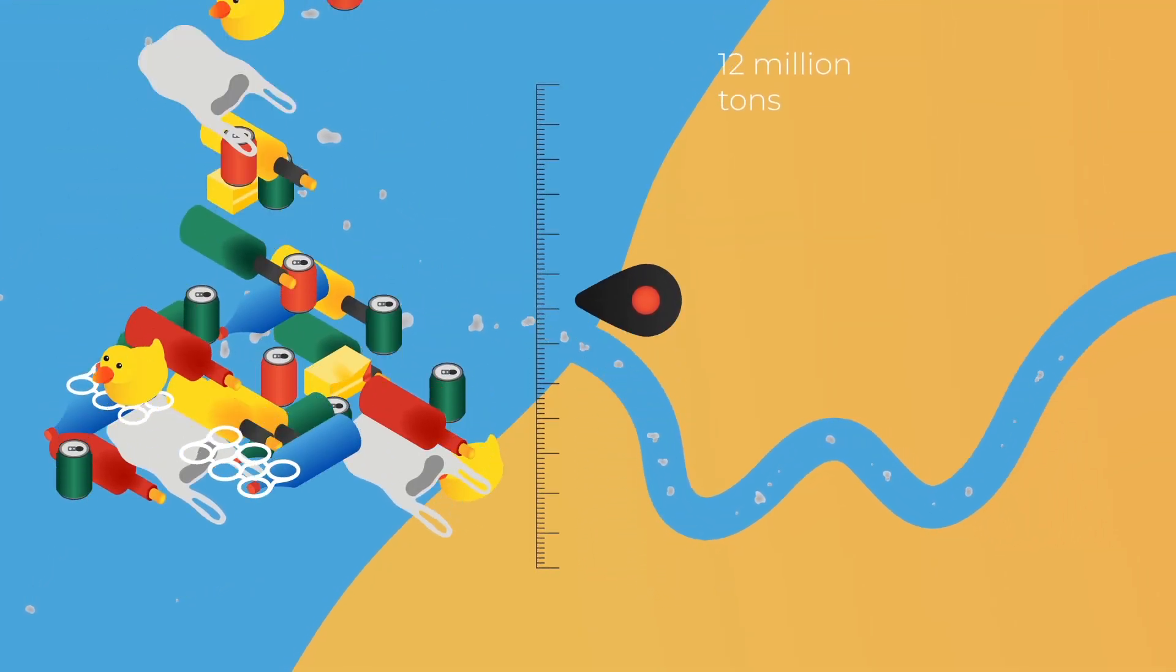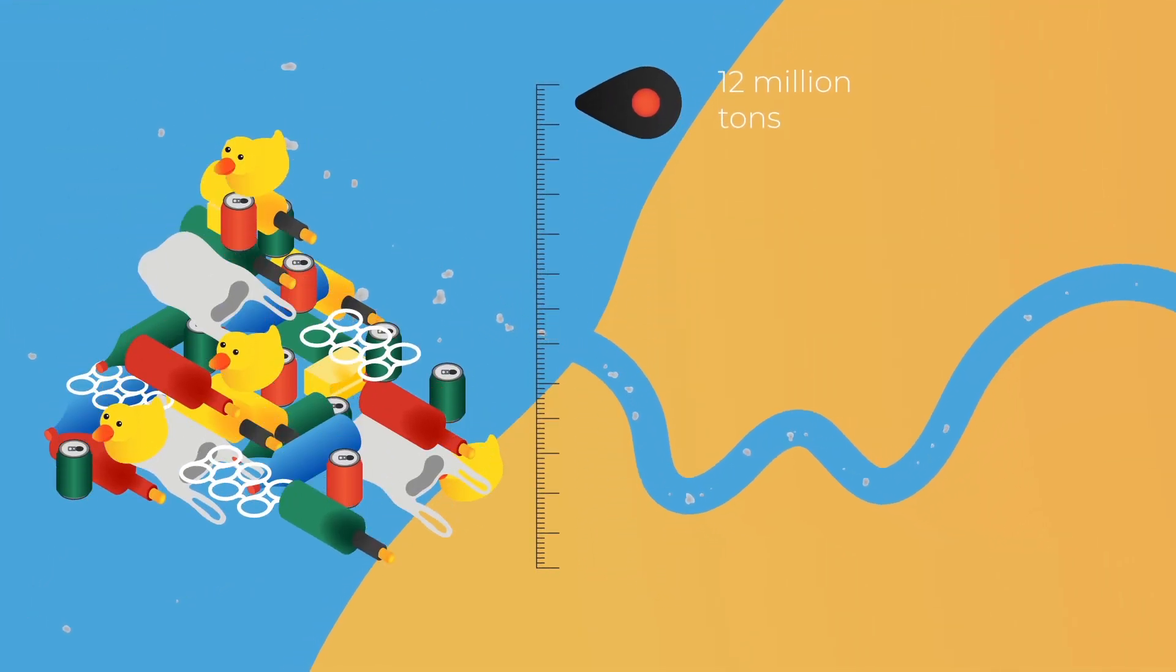Every year, up to 12 million cubic tons of plastic end up on our coasts. Added together, in line, they could cover the coastal areas of the whole planet.